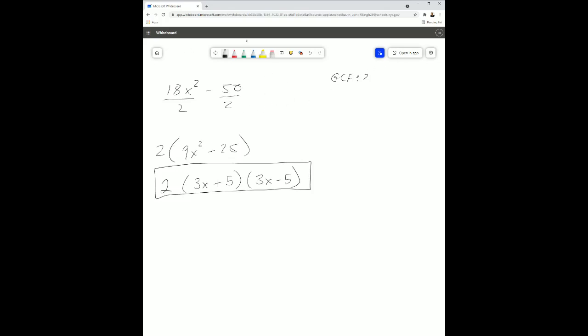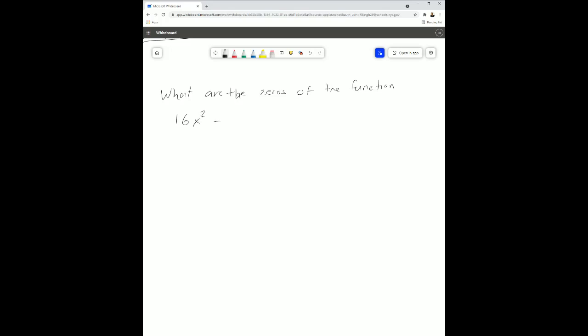So we also had challenge question number 2, which I'll scroll down over here, we'll do that one. So challenge question number 2 said, what are the zeros of the function, so what are the zeros of the function 16x squared minus 64? Now before we do this, remember, ask yourself, what is this question asking you? So they're asking us, what are the zeros?